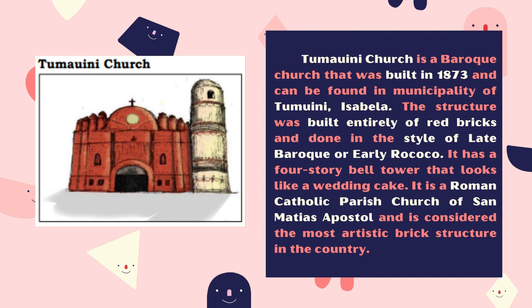Tumauni Church is a Baroque church that was built in 1873 and can be found in the municipality of Tumauini, Isabela. The structure was built entirely of red bricks and done in a style of late Baroque and early Rococo. It has a four-story bell tower that looks like a wedding cake. It is a Roman Catholic parish church of San Matias Apostol and is considered the most artistic brick structure in the country.